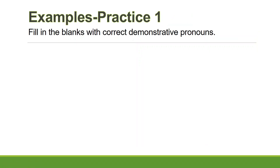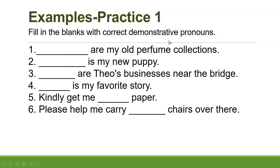Let's continue with practice number one. Fill in the blanks with the correct demonstrative pronoun — this, these, that, or those. For number one: '_____ are my old perfume collections.' The answer is 'these' because 'are' indicates plural and you're referring to something near you. Number two: '_____ is my new puppy.' The answer is 'this' — one puppy, near you.